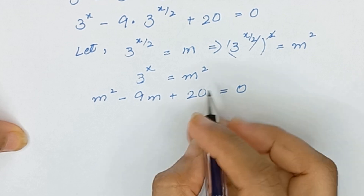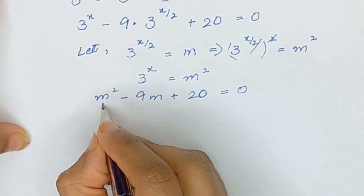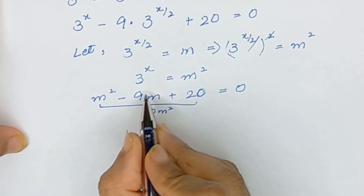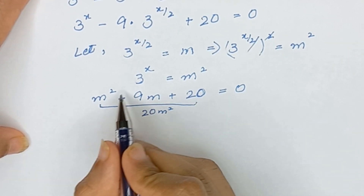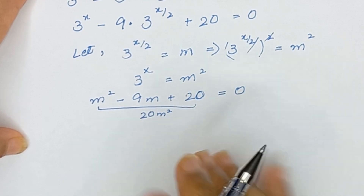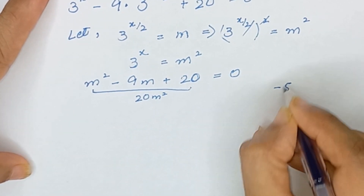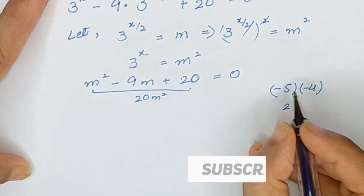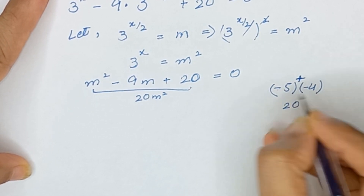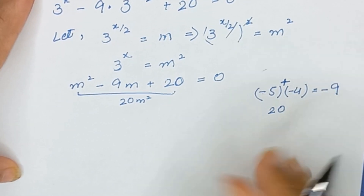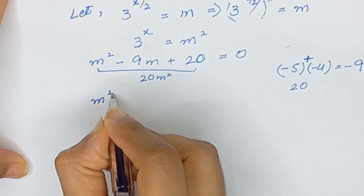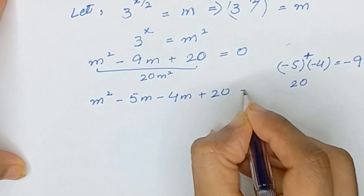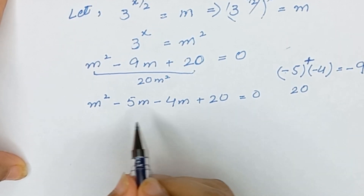Now we have a quadratic equation, so we will solve it by factorization. The first and last terms give 20m squared and the middle term is minus 9m, meaning the sum should be minus 9m and the product should be 20m squared. If we take factors negative 5 and negative 4: their product is positive 20 and their sum is negative 9. So we write m squared minus 5m minus 4m plus 20 is equal to 0.